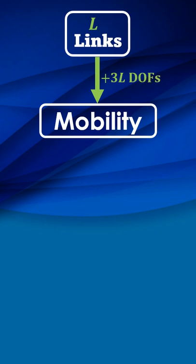A mechanism is built from links. Let L be the number of links. Each link has three degrees of freedom. In all, there is three times L available degrees of freedom.